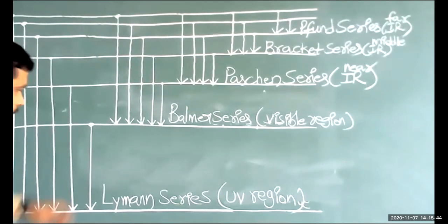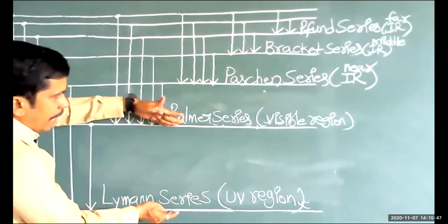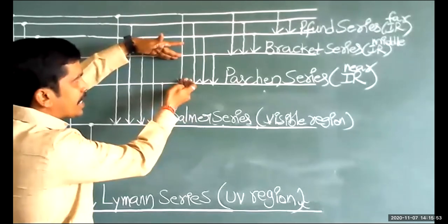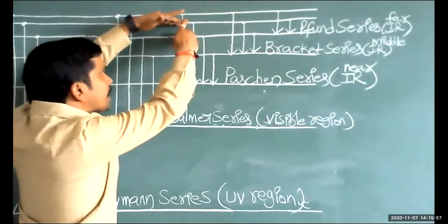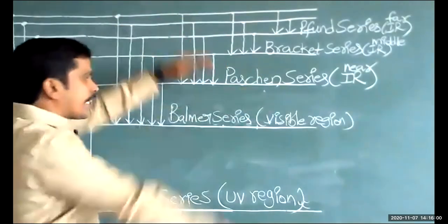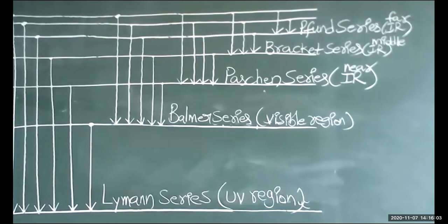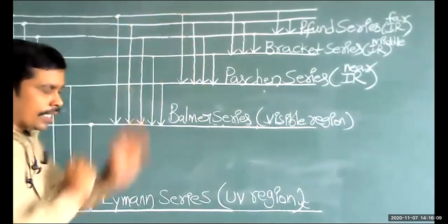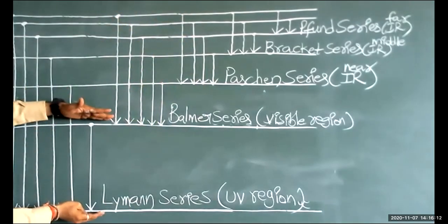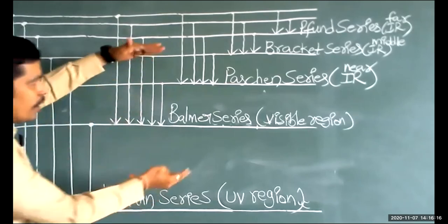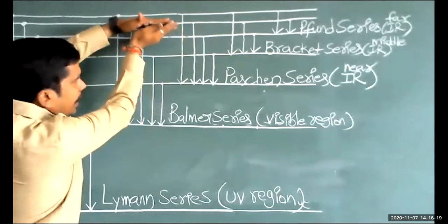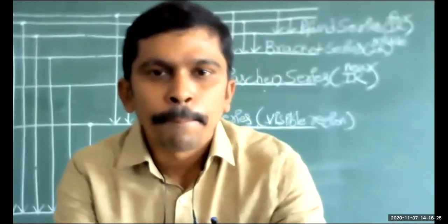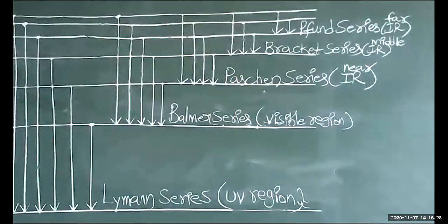Between the first and second level, the energy gap is maximum. Between second and third level, the gap decreases. Third to fourth, the gap decreases further, and so on up to sixth to seventh level. Most students draw these gaps with equal spacing, which is not a correct diagram. We must maintain the maximum gap between the first and second energy levels, and the energy level gaps slowly decrease. This will be explained by Niels Bohr by calculating the energies of the orbits of atoms.